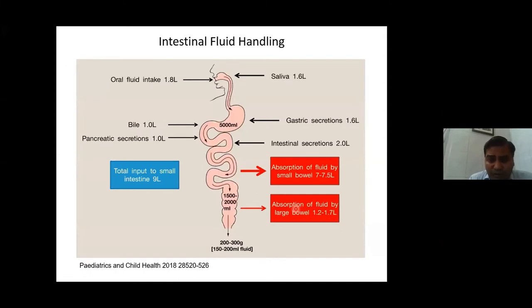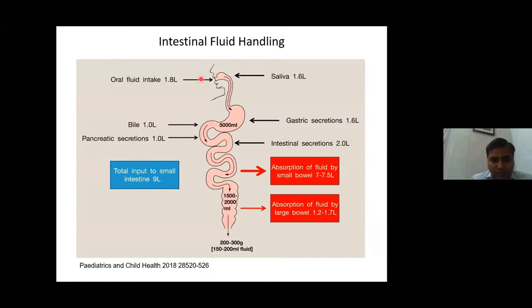Bowel function is mainly a balance between intestinal fluid handling and motility. We take almost 1.8 to 2 liters of oral fluid, plus 1.6 liters of saliva, 1.6 liters of gastric secretions, and 2 liters of bile and pancreatic secretions — totaling around 7 liters. The intestine also secretes 2 liters, so the jejunum and duodenum have almost 9 liters of fluid.